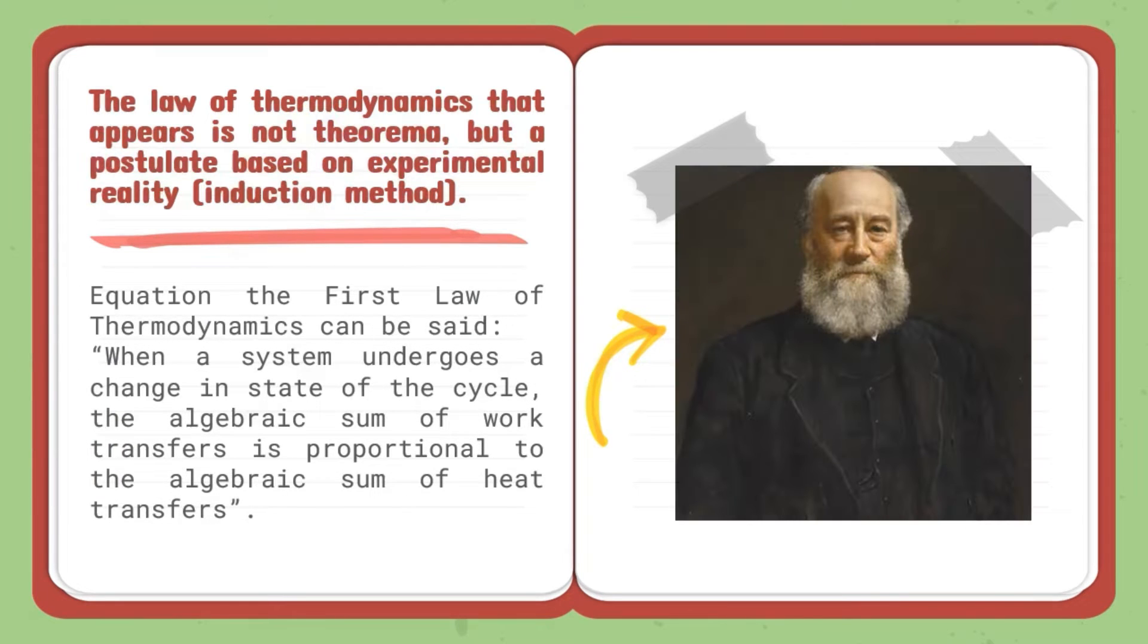The law of thermodynamics that appears is not a theorem, but a postulate based on experimental reality or induction method. Starting from Joule in 1843, who conducted experiments on various types of work, he found the system in equations. With this equation, the first law of thermodynamics can be said: when a system undergoes a change in state of the cycle, the algebraic sum of work transfers is proportional to the algebraic sum of heat transfers.